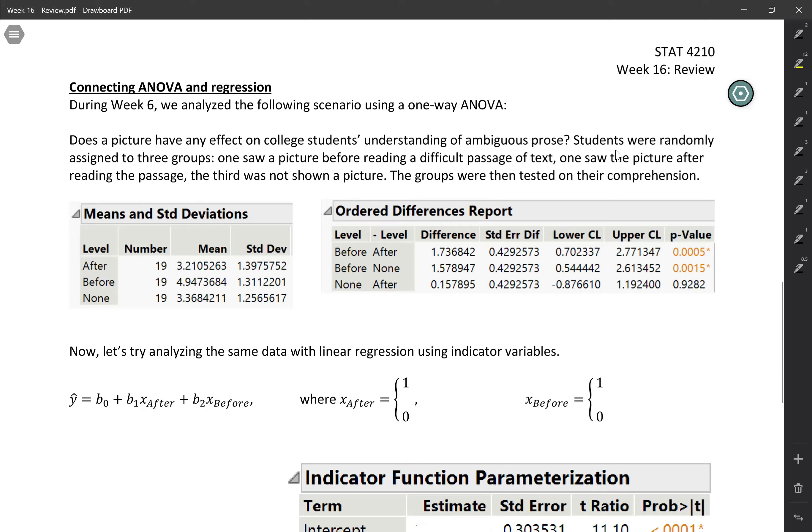So as I mentioned earlier, ANOVA and regression both involve linear models, so they're essentially two ways of describing the same thing.